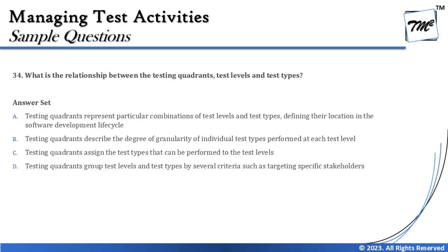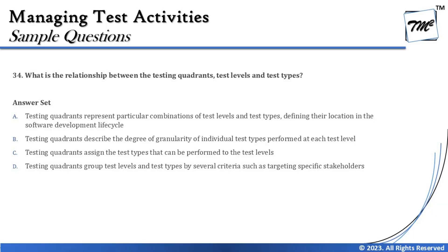Let's look at the options. Option A says testing quadrants represent a particular combination of test levels and test types defining their location in the software development lifecycle. Yes, testing quadrants do group test levels and types according to multiple criteria, but at no point did we discuss that it tells us where exactly to execute something in the SDLC. It does not tell me the position or alignment of what to execute when. So the second part of option A — defining their location in the SDLC — is not correct.